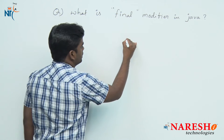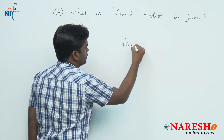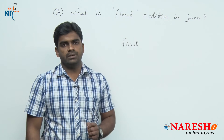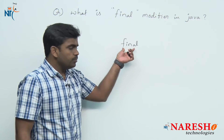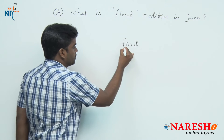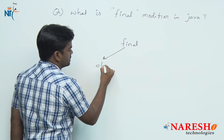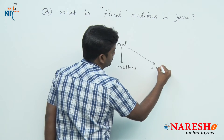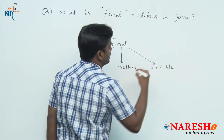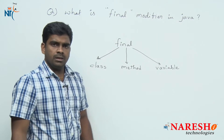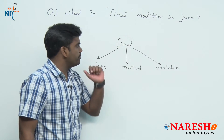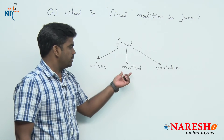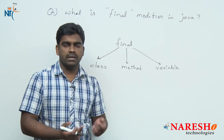First of all, final is just a keyword — we can also call it a modifier. You can apply this final modifier to a class, to a method, or to a variable. So what is the use of a final modifier — whether it's a final method, final class, or final variable?